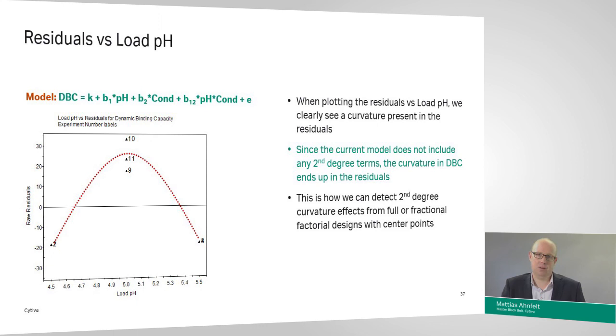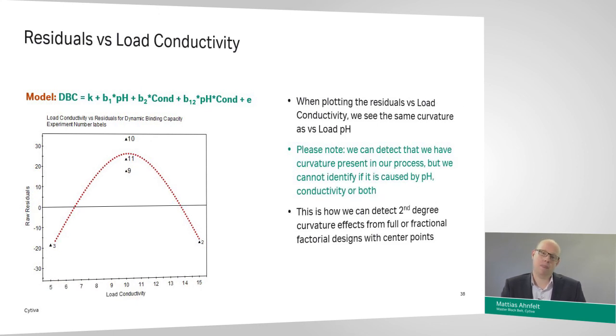However, if we now flip to the graph of residual versus conductivity, it looks exactly the same. So, and this is an important point as well in terms of looking at factorial and fractional factorial DOEs, is that we can detect curvature. So, we can clearly see that we have a curvature that remains, in this case, in the residuals, and we need to expand the DOE to better understand that. But we cannot say which input parameter, which process X, is causing the curvature. It could be load pH, it could be load conductivity, or it could be both of them.